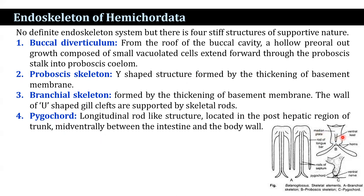The proboscis skeleton is a stiff supportive structure formed by thickening of the basement membrane. It consists of a broad, flat, almost rectangular median plate and a ventral keel region, and also contains posteriorly two diverging horns.